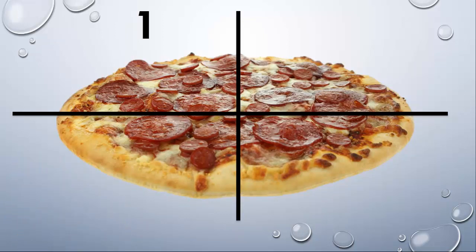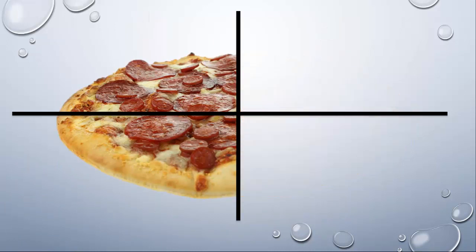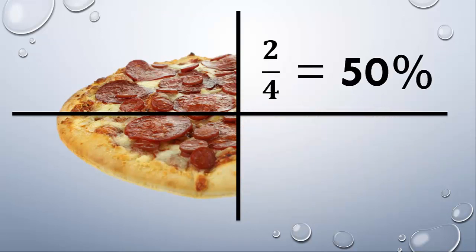And if your parents cut that pizza into one, two, three, four slices, you might decide to eat two slices of pizza. In that case, you ate two out of four slices of pizza, or 50% of the pizza. That's half the pizza.